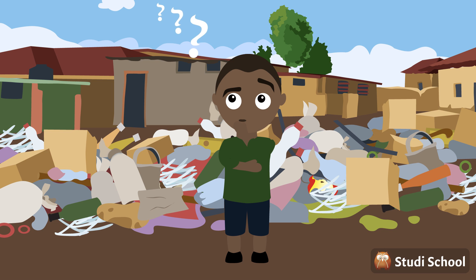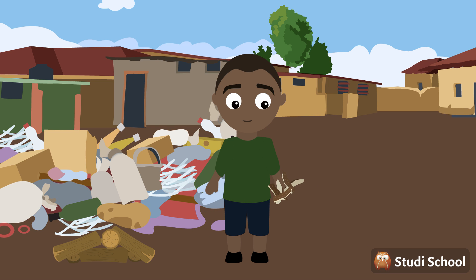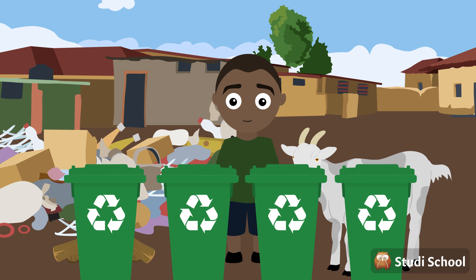So, how do we dispose of all this waste? One of the ways is to burn waste. Waste can also be buried. Organic waste, like vegetable peelings, can be fed to animals. Waste can also be recycled — they usually split into paper, glass, plastic, and tin.